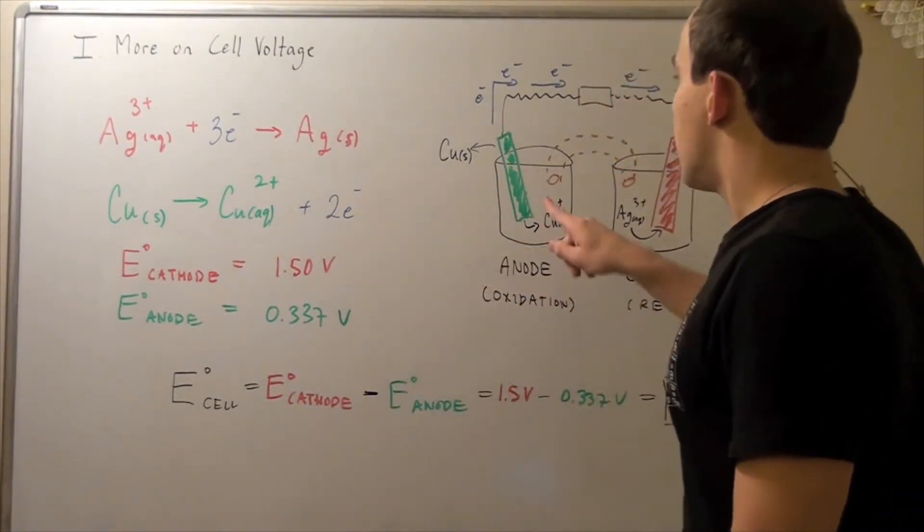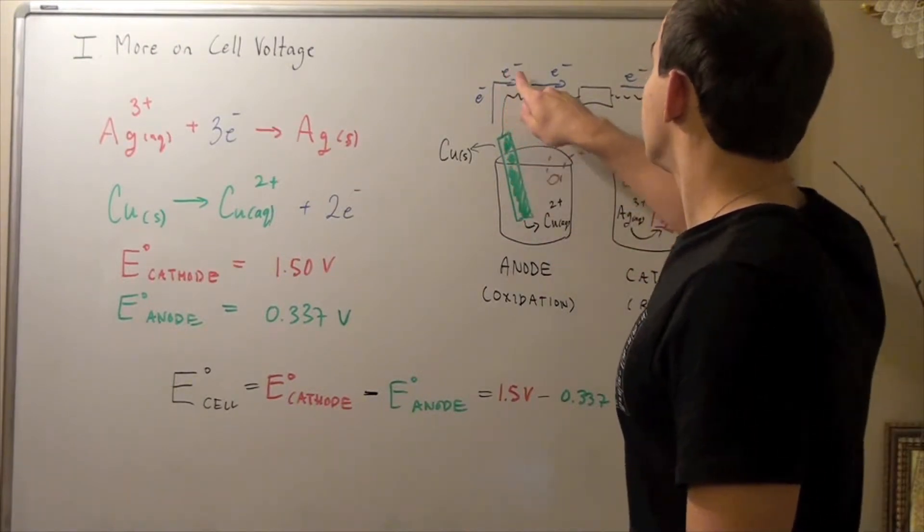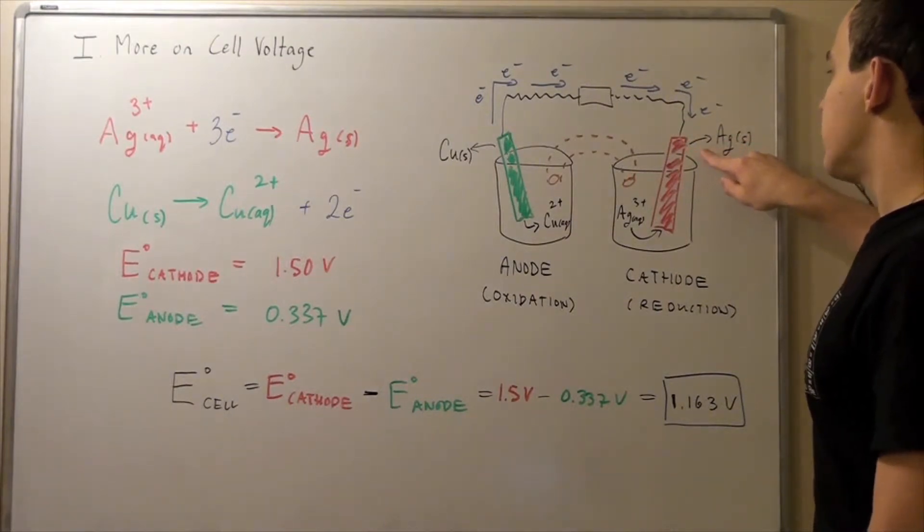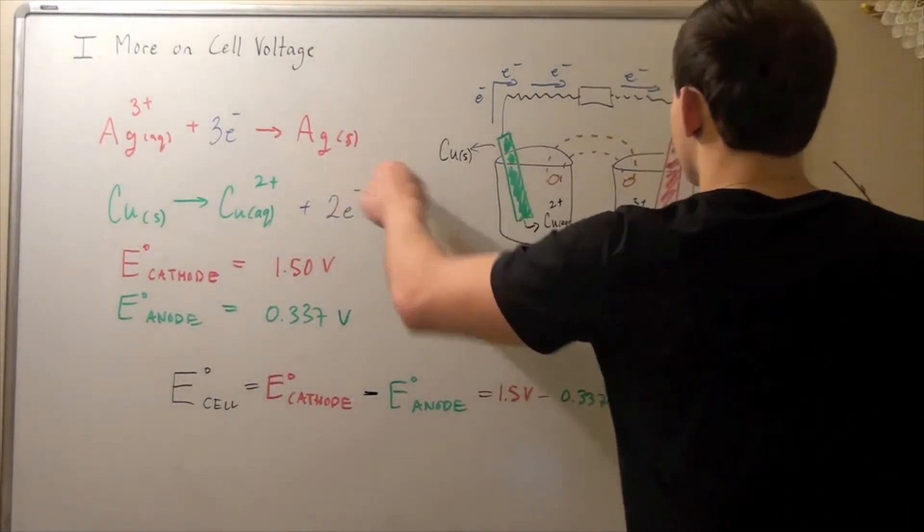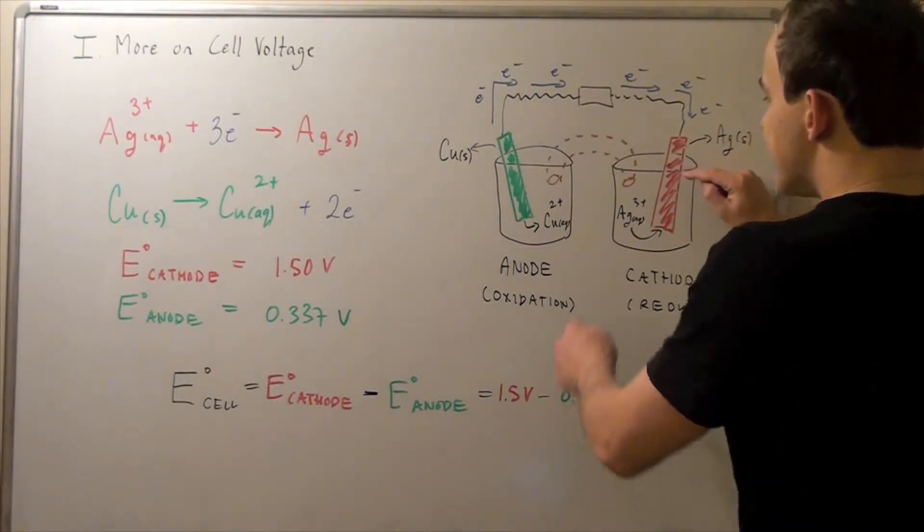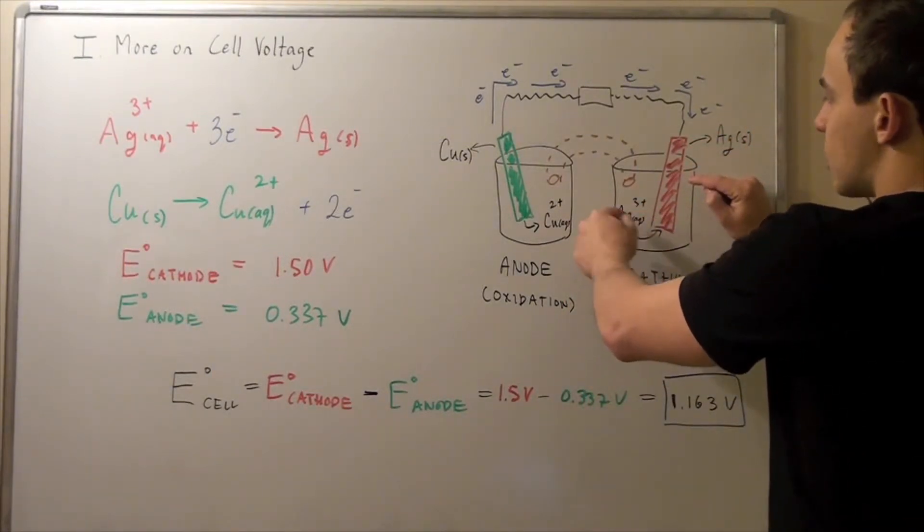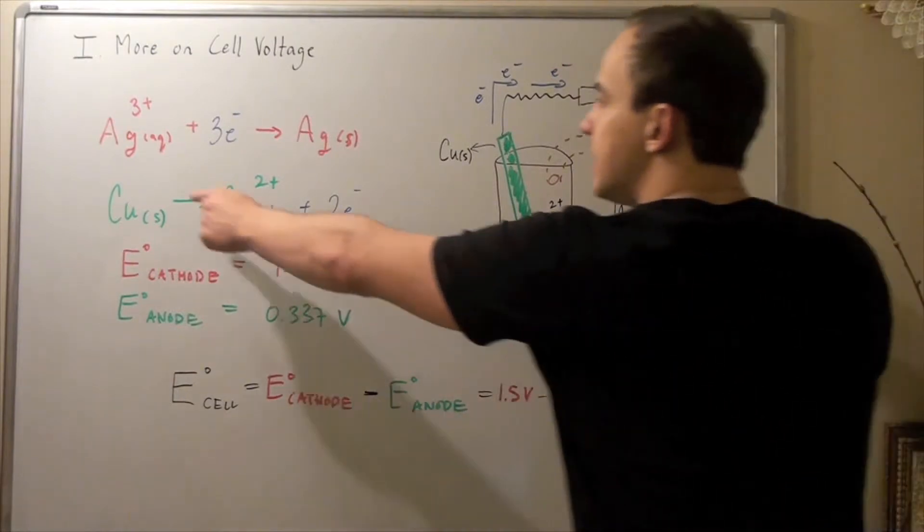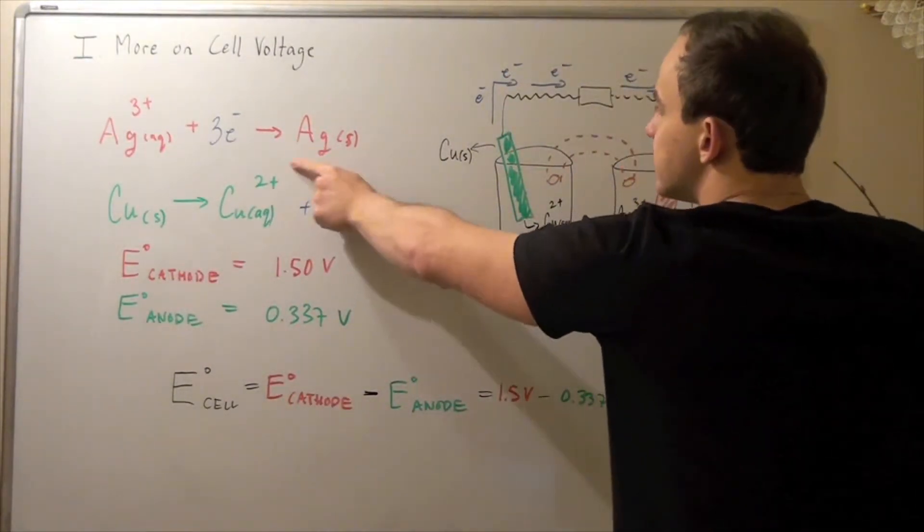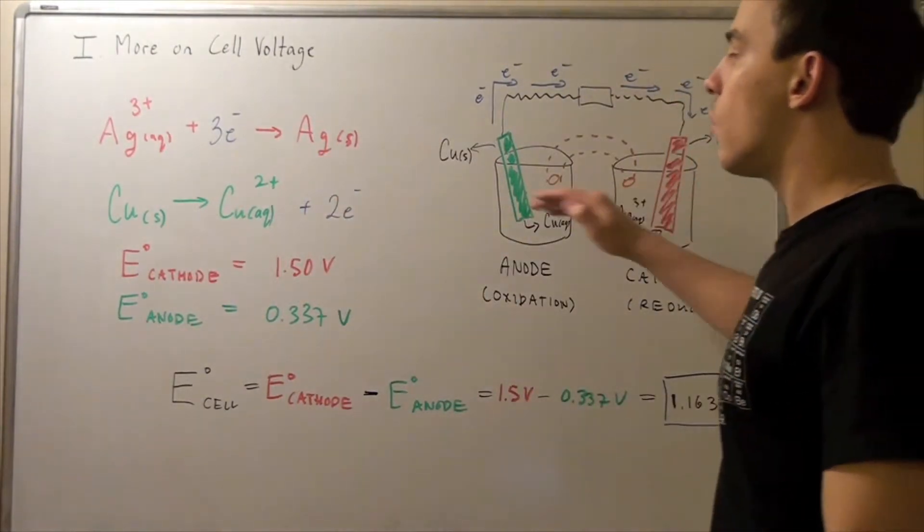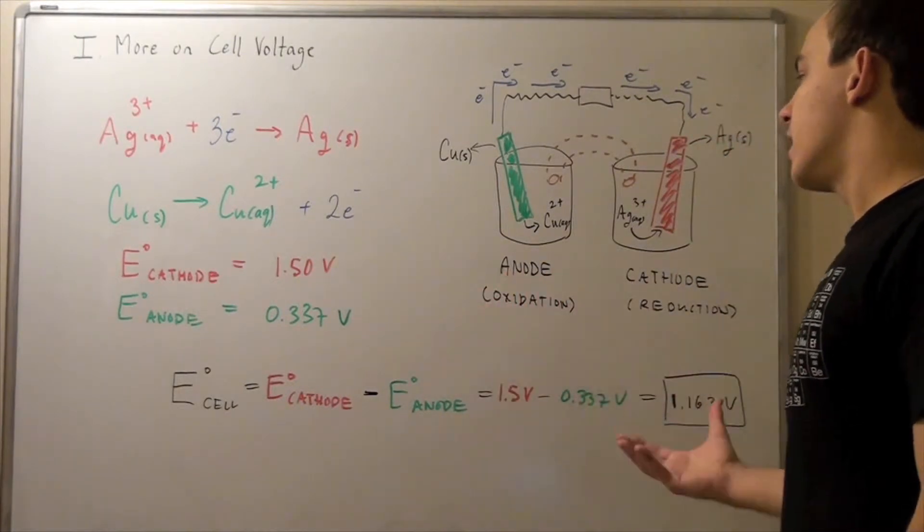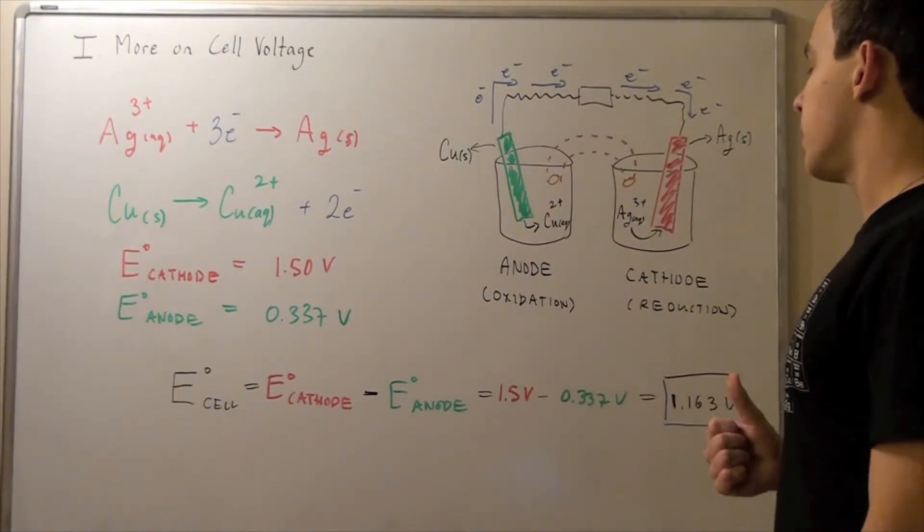The electrons, on the other hand, travel into this conductor, and all the way across into this red electrode. Now when these electrons enter into our electrode, these aqueous ions are taken up. And they react within the solid, creating our solid. And that's called reduction. So reduction takes place in the cathode, and anode is the place where oxidation takes place.